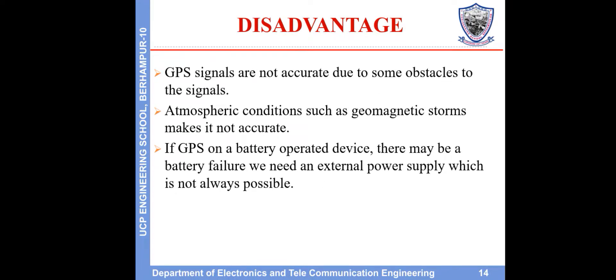Disadvantages. GPS signals are not accurate due to some obstacles to the signals or atmospheric conditions, such as geomagnetic storms, which make it inaccurate. If GPS is on a battery-operated device, there may be a battery failure, and we need an external power supply, which is not always possible.